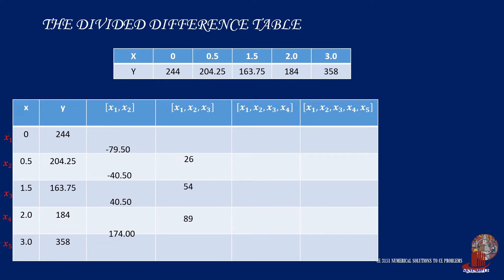Moving on to the third-degree difference column. The first value of the third-degree difference is 54 less 26, which is divided by 2 less 0 and it is equal to 14. The second value is taken as 89 less 54 divided by 3 minus 0.5, which gives us another 14.